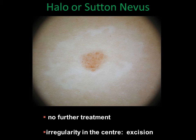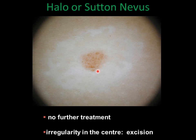To summarize: if you see a halo surrounding a lesion, in most cases this is an example of a halo or Sutton nevus. Now you have to look in the center. If you see a melanocytic lesion with regular globules, a homogeneous area, or a combination of both, you can be sure that this is a halo or Sutton nevus.